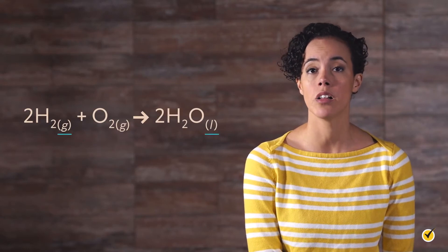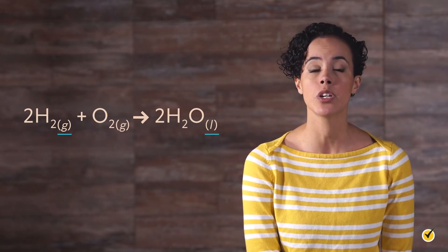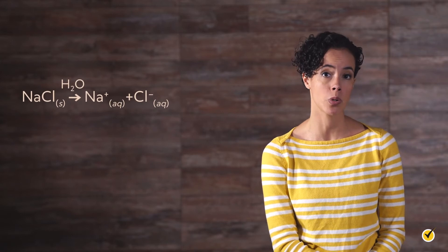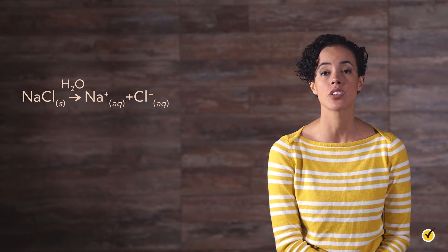Now, it's often useful to know what phase our reactants and products are in. This not only helps us visualize the reaction, but will also be useful when trying to control the direction and speed of the reaction. We do this by including a G, L, or S after the substance to indicate that it is in the gas, liquid, or solid phase, respectively. Additionally, you will see some substances listed as aq, which stands for aqueous, signifying that it is dissolved in water. For example, the chemical equation for sodium chloride dissolving in water specifies that the solid salt is converted to solvated ions.